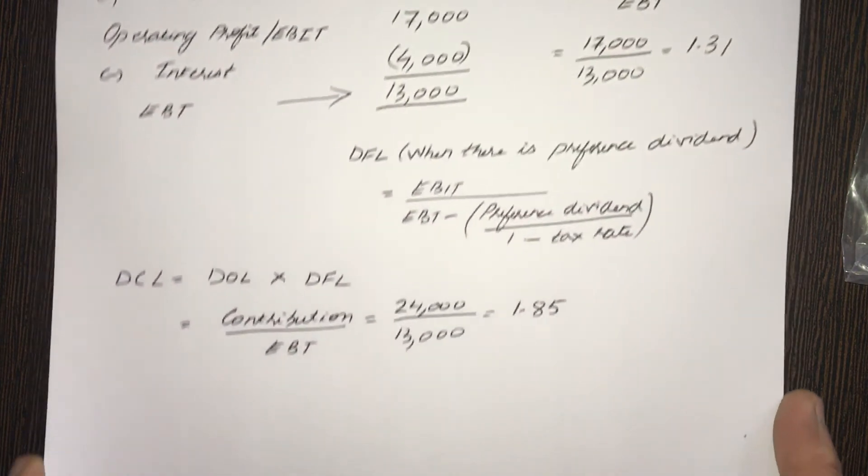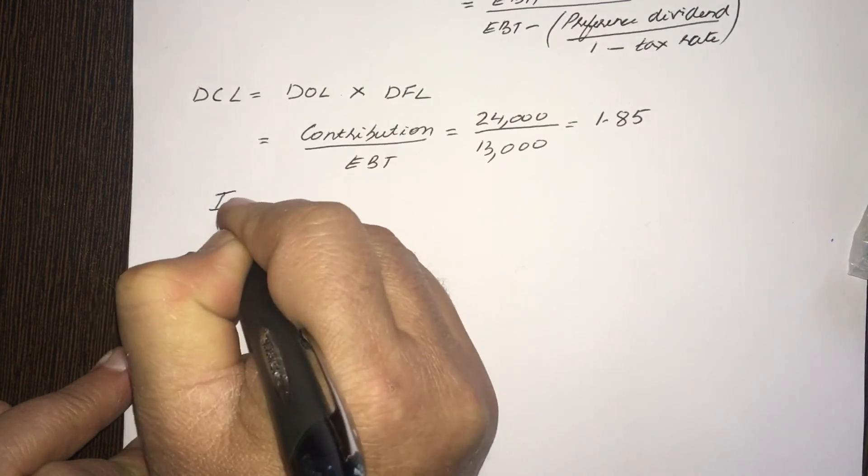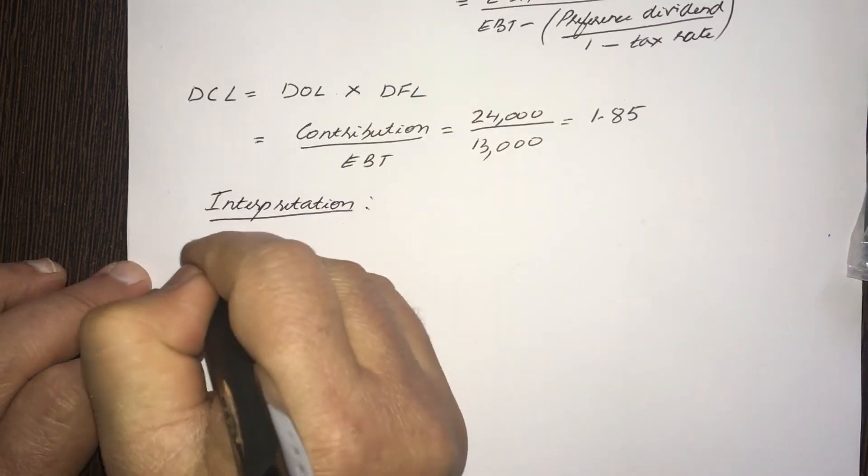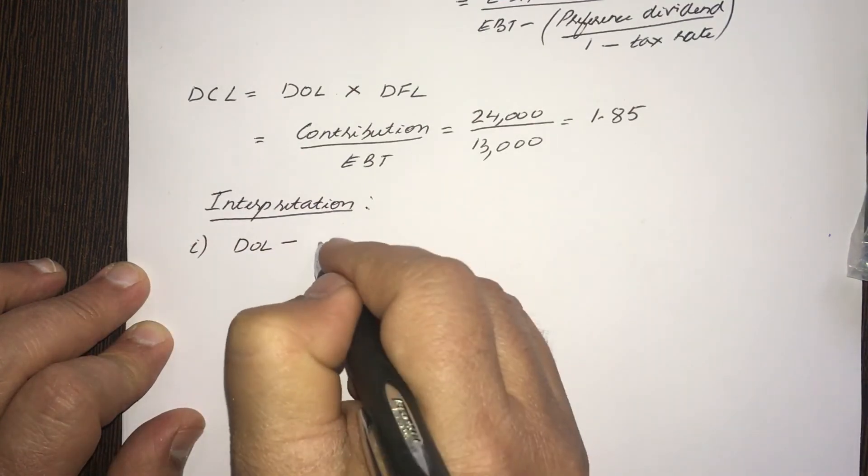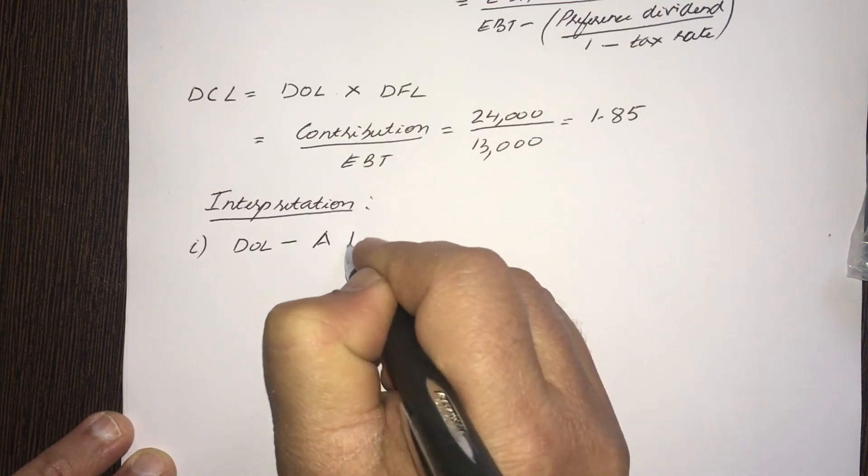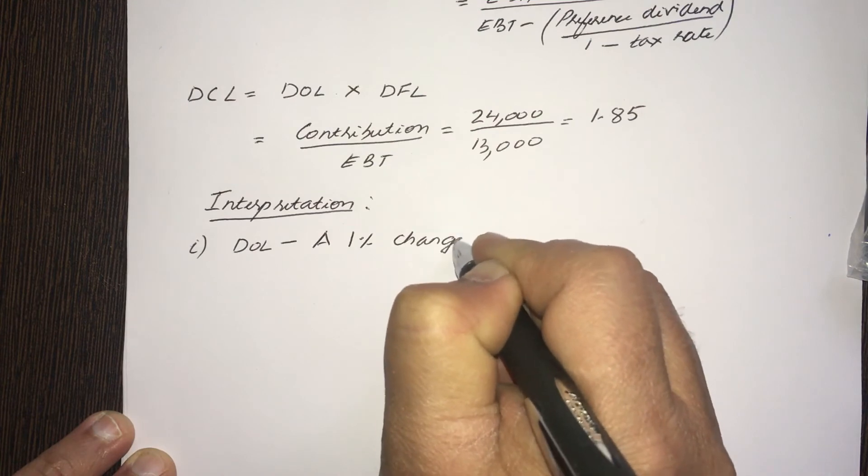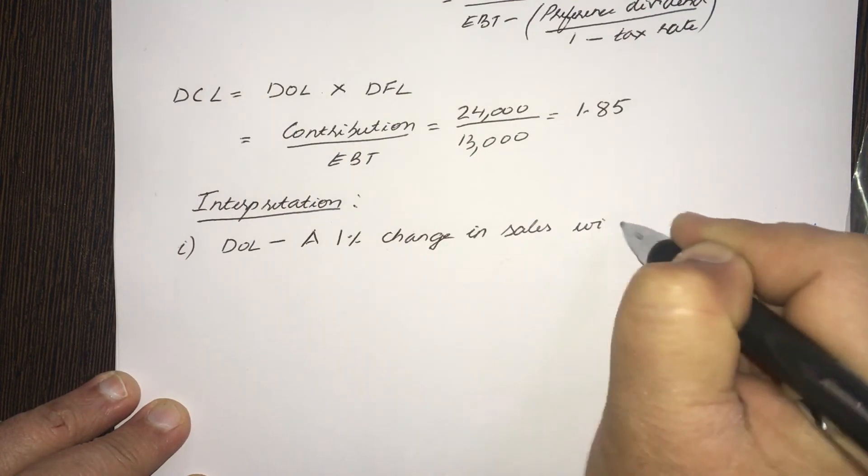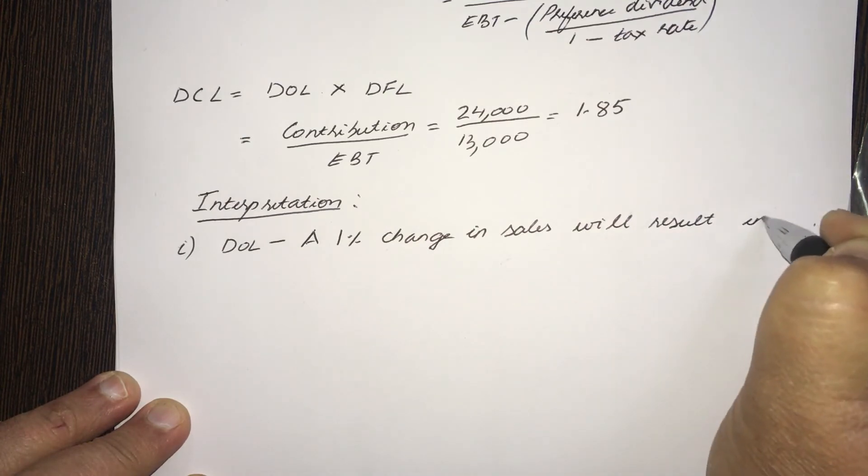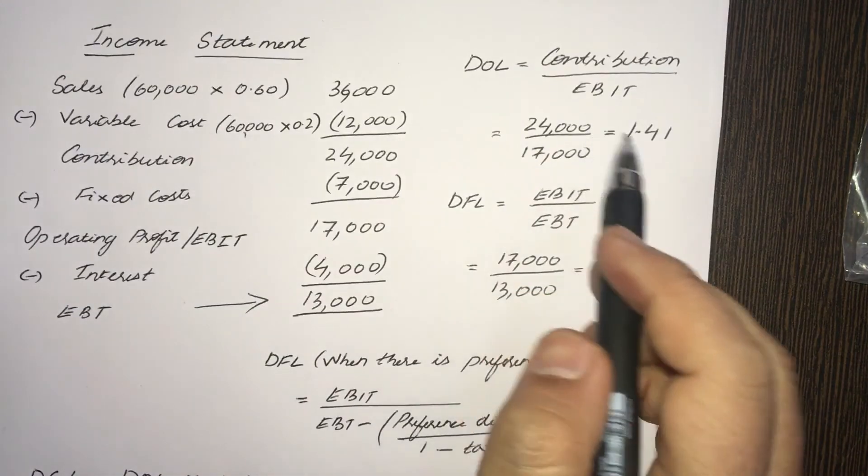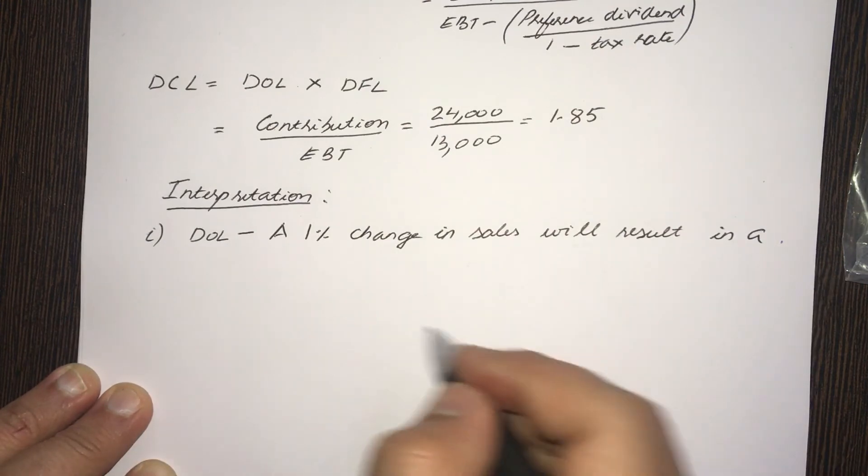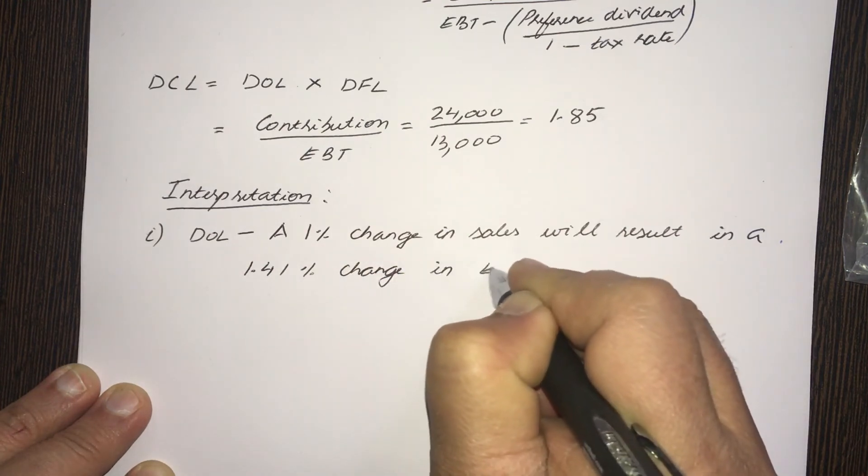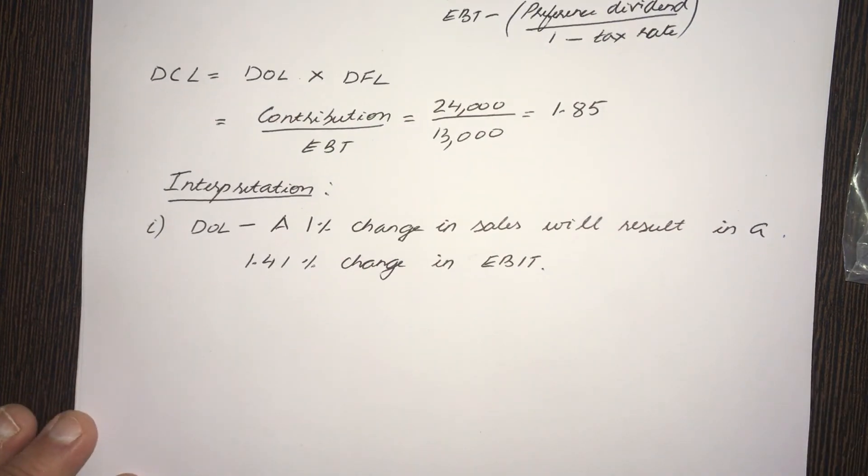Now, how do we interpret the results? First one, interpretation number one, for DOL, the interpretation is a 1% change. When you say change, it could be a 1% increase or decrease. A 1% change in sales will result in... What is DOL? DOL is 1.41. So, a 1% change in sales will result in a 1.41% change in EBIT.